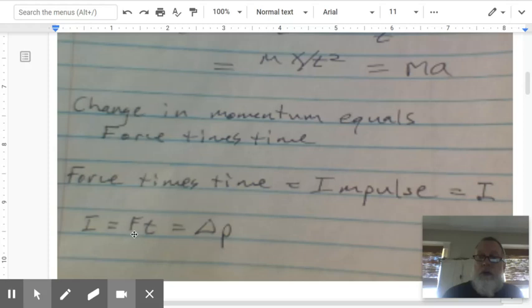Same thing when a pole vaulter goes over the bar. They're going to come down and land in the pit. If they land on the ground or in the pit, the change in momentum is the same. But the pit increases the time of contact. Therefore, the force of impact is decreased as the pole vaulter lands safely into the foam pit.